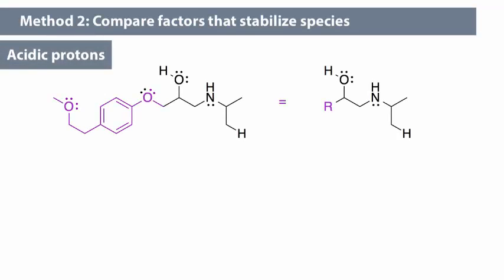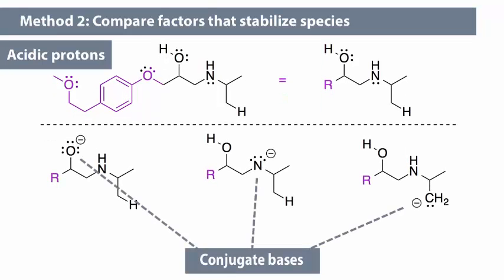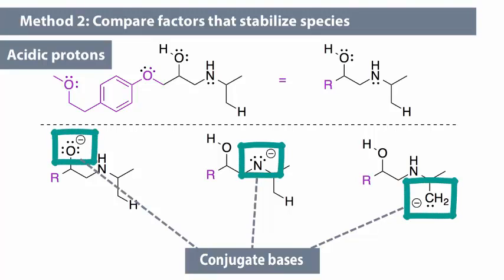Alternatively, we could use method 2 to determine the most acidic proton. To do so, we start by drawing each of the conjugate bases. Now compare the conjugate bases. We focus on the location of the negative charge, and how that negative charge is stabilized in each base.